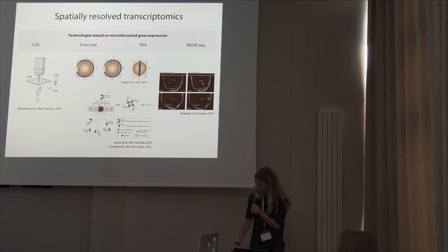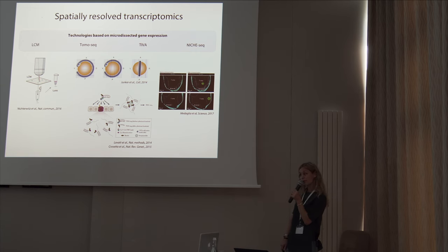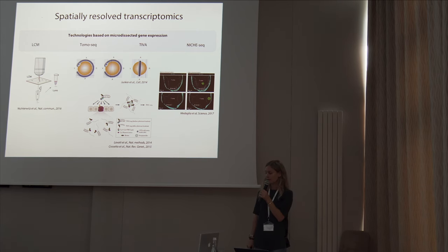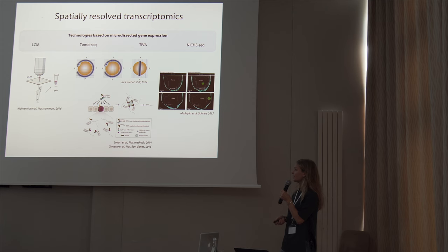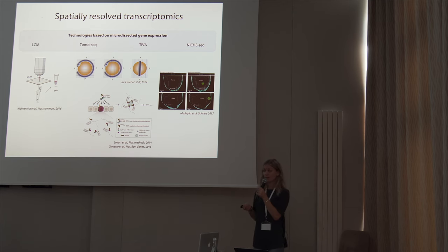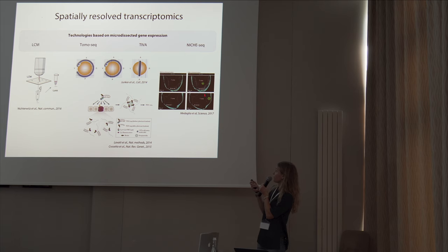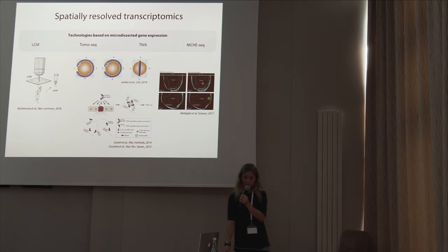There is also a technology called NISTIC, where you use transgenic animals that express photoactivatable GFP — green fluorescent protein. You intravenously transfer landmark cells, such as T and B cells, into the animal. Then you photoactivate areas of a specific niche and select these cells based on the expression of GFP.